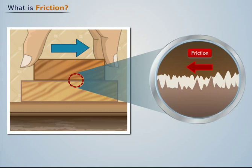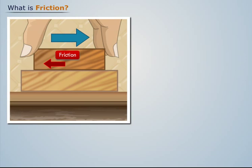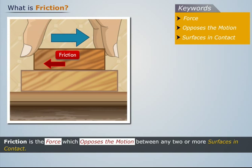The direction of friction is always opposite to the direction of motion. Thus, friction is defined as the force which opposes the motion between any two or more surfaces in contact.